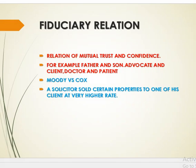The second element is a fiduciary relationship — a relation of mutual trust and confidence, such as between father and son, advocate and client, or doctor and patient. In the case of Moody versus Cox, a solicitor sold certain property to his client at a very high rate. The client proved that the properties were overvalued and the advocate was in a position to dominate the will of the client, so the contract was set aside.